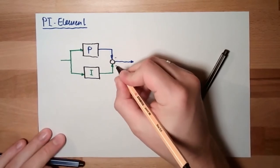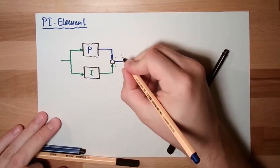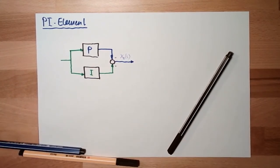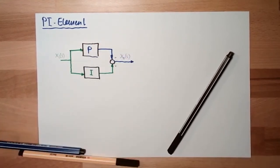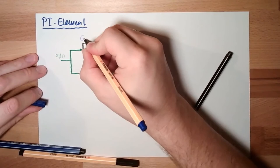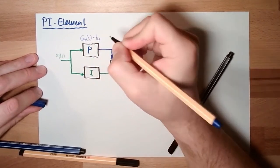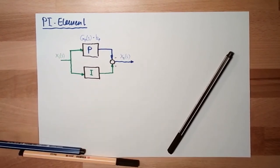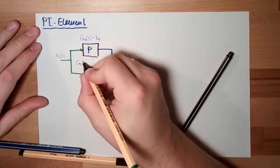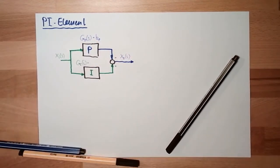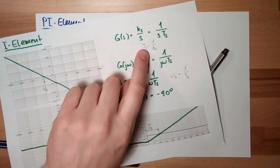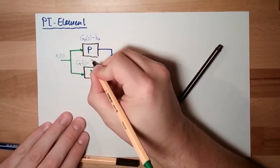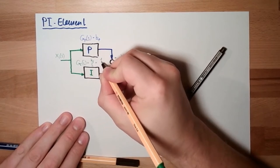So we have here plus and plus. This here is xo from s, and this here is xi from s. The transfer function of a p element we had already several times: kp, just a factor. The transfer function of an i element — please remember — is ki divided by s, or 1 divided by s·ti, where ti is 1 divided by ki.